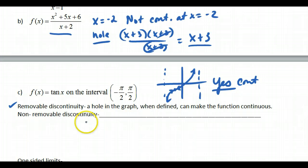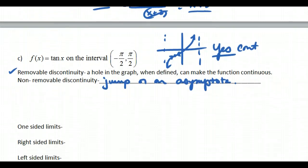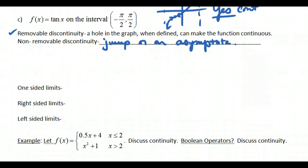Non-removable discontinuity is a jump or an asymptote. You cannot resolve these two with just a single point. And so when I say a jump, it's a gap jump. It's not just a hole in the graph.